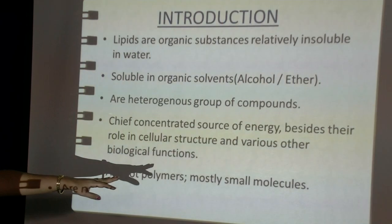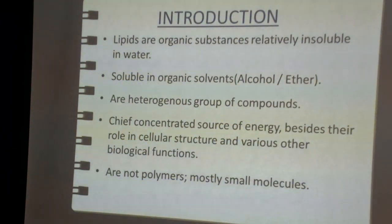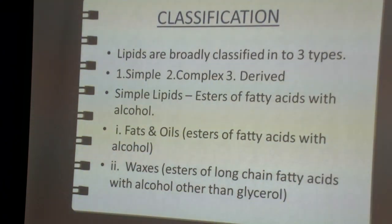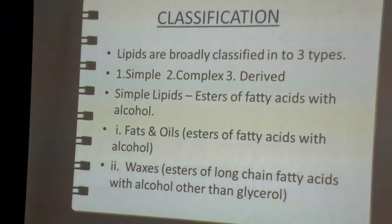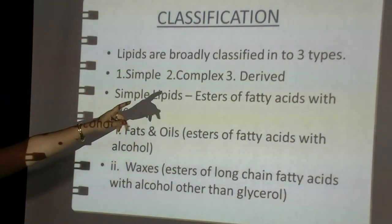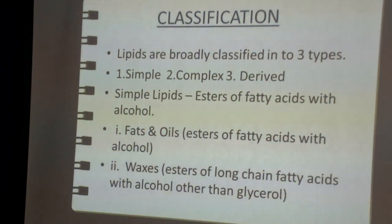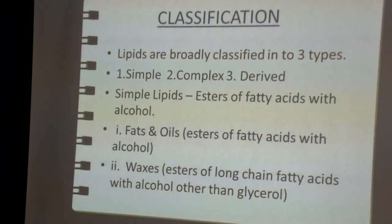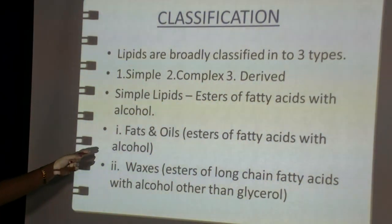Lipids are mostly small molecules — they are not larger polymers. Coming to classification, lipids are organic compounds with different groups of compounds combined together, hence they are a heterogeneous group. The classification of lipids shows three different types: simple lipids, complex lipids, and derived lipids. Simple lipids are esters of fatty acids with alcohol, normally glycerol. Simple lipids have two subtypes: fats and oils, and waxes.